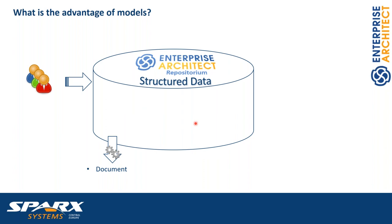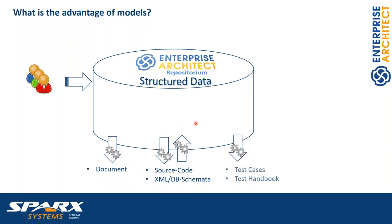We just have to modify the model in one location and we can automatically regenerate all our documents. We don't have to read the whole document and change all the pages and find all the pictures we've drawn and update them. This is the first low-hanging fruit that already pays off when going with a model-based approach. We can also generate source code, XML schema, or database schema, and reverse engineer them for round-trip engineering.